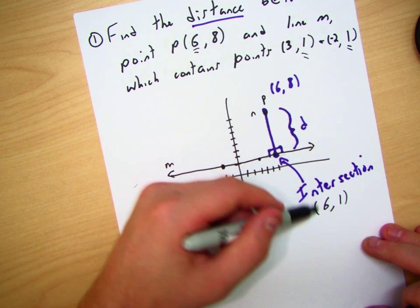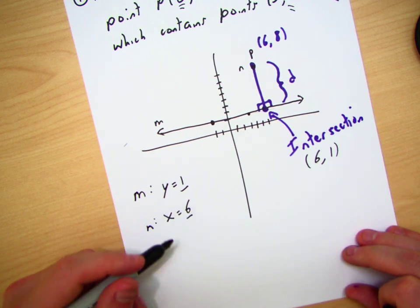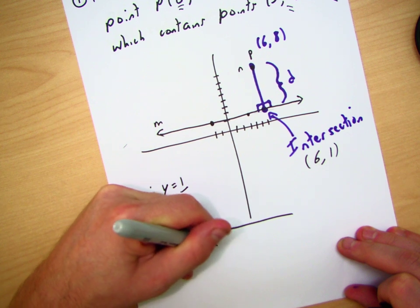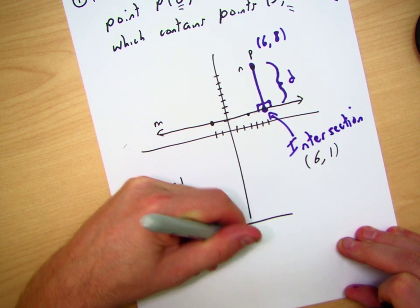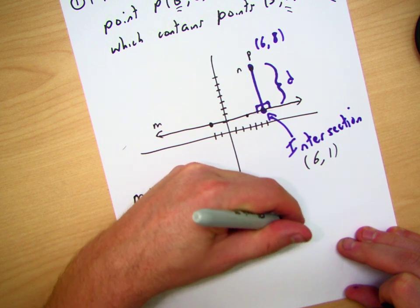Now that I know these two points, I can rely on the distance formula. And the distance formula, just to refresh your memory, is d = √((x₂ - x₁)² + (y₂ - y₁)²).